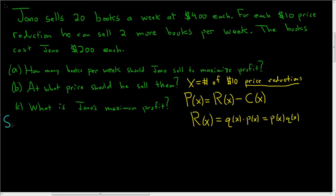So we have to maximize the profit function — we have to make this as big as possible. Before we do that, we actually have to find it, and that's the hard part. That means we have to find the revenue and we have to find the cost. Let's go ahead and find the revenue first. To find the revenue, we need the price function, so little p of X, and we also need the quantity function, so little q of X.